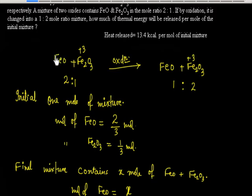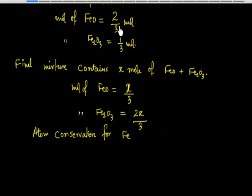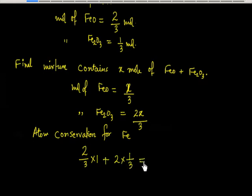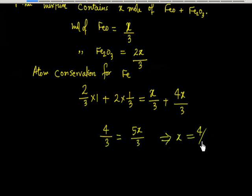Let us apply atom conservation for iron. Initially: FeO contributes 2/3 × 1 iron atoms, and Fe2O3 contributes 2 × 1/3 iron atoms. Finally: FeO contributes x/3, and Fe2O3 contributes 2 × 2x/3 = 4x/3. Setting the left side equal to the right side gives 4/3 = 5x/3, so x = 4/5.